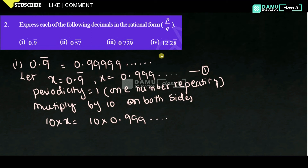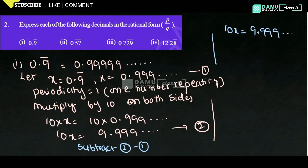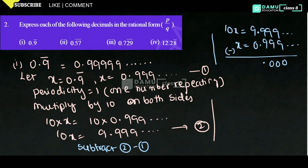This is equation 1. If you multiply, we get 10x equal to 9.9999... Let's take this as equation 2. Now subtract equation 2 minus equation 1. So, 10x minus x — taking x as common, 10 minus 1 will be equal to 9. Then 9 minus 0 will be 9.